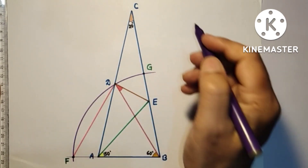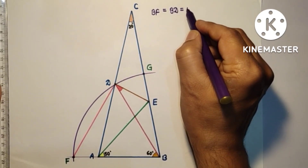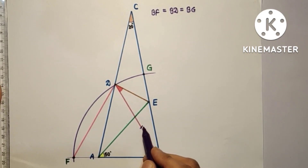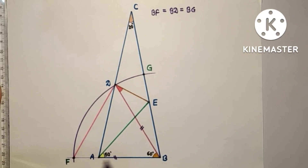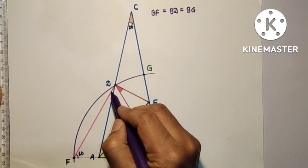By construction we can say that BF is equal to BD is equal to BG — these are all the same radius. Since angle ADB is 60 degrees and BF equals BD, triangle BFD is isosceles. But since the angle at B is 60 degrees, it is actually equilateral, so all angles are 60 degrees.